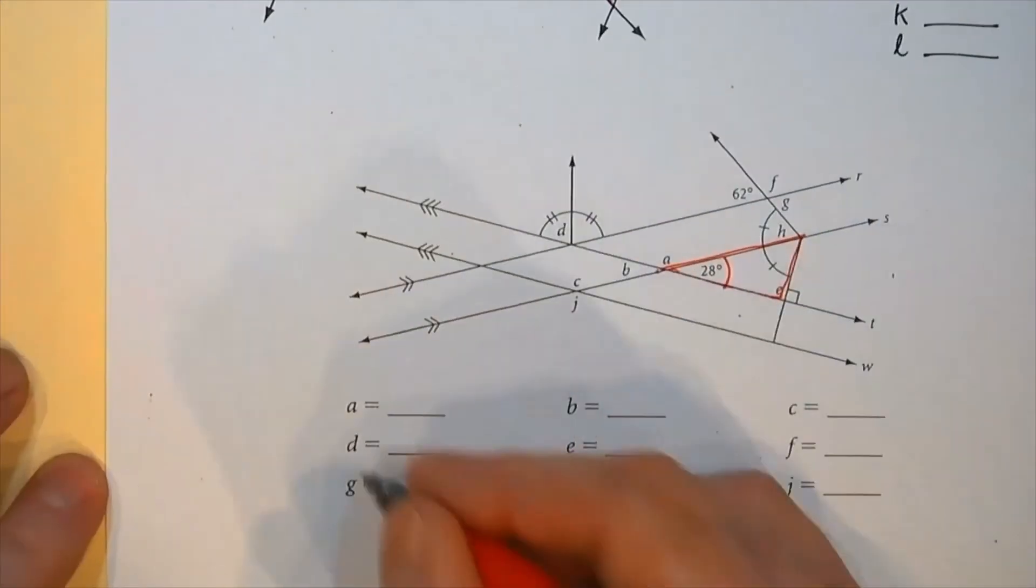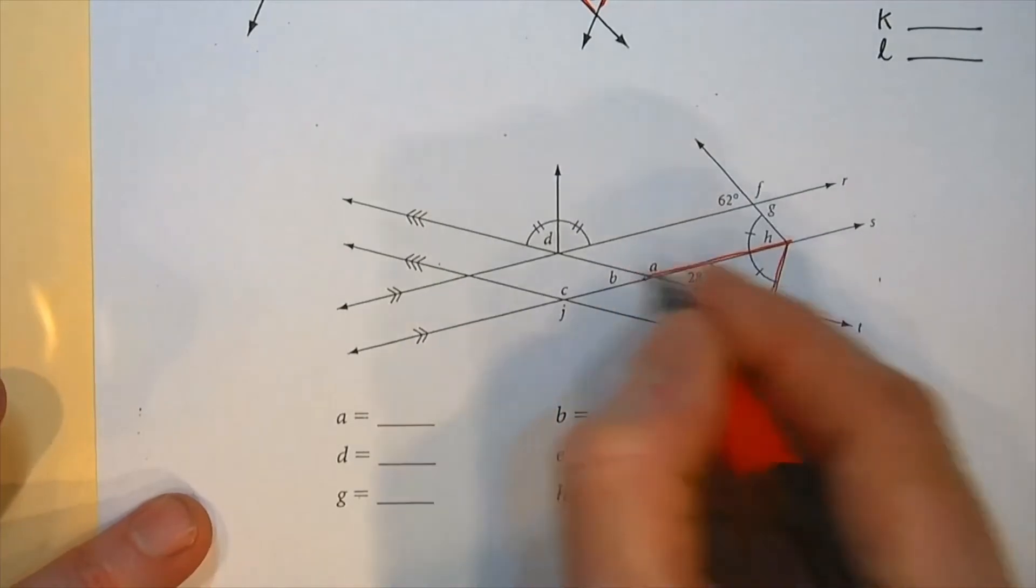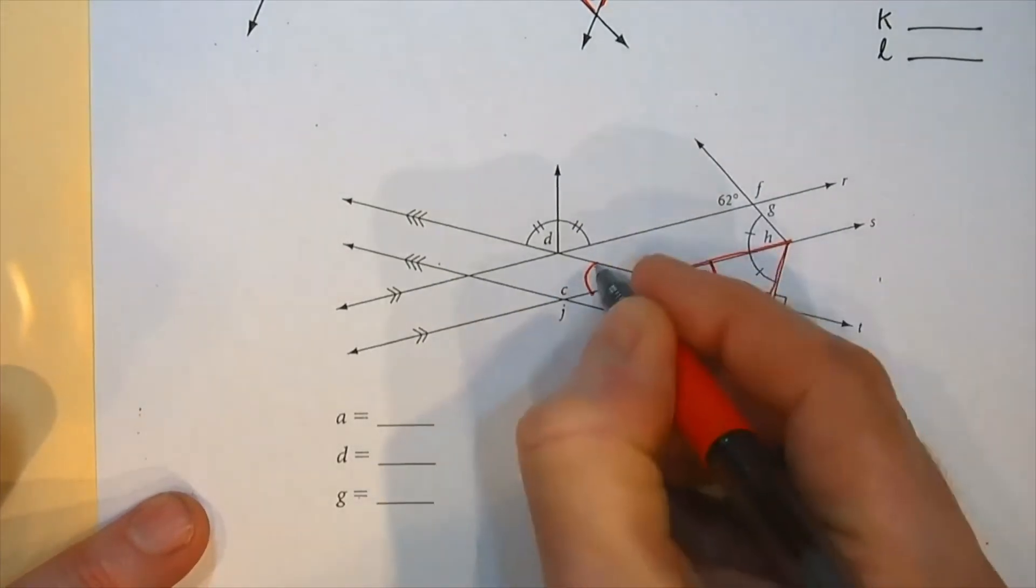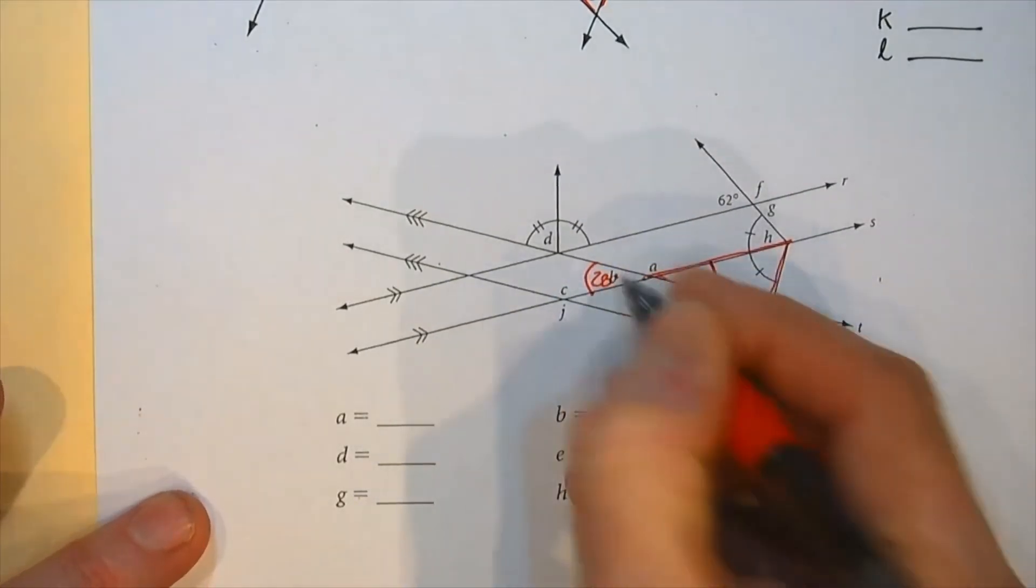And like I say, when you know an angle, don't just write down here, kind of go, wait, if that's 28, that guy's vertical to this. These guys are the same. 28. Write them in on the drawing as you go.